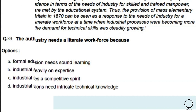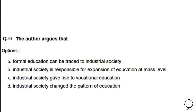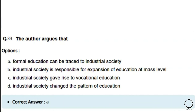Next question on the same passage: The author argues that — options: a) formal education can be traced to industrial society, b) industrial society is responsible for expansion of mass education, c) industrial society gave rise to vocational education, d) industrial society changed the pattern of education. The right answer is option A — formal education can be traced to industrial society.